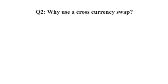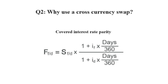Another advantage of a cross-currency swap occurs when the covered interest rate parity does not hold, and one can actually get a better return by investing in the foreign currency rather than the domestic currency. The covered interest rate parity basically says that investing in a domestic bond and then converting the whole amount to a foreign currency at the forward exchange rate gives the same return as converting the domestic currency to foreign at the spot rate at the beginning and then investing in a foreign bond.